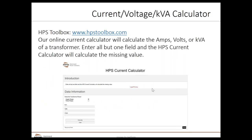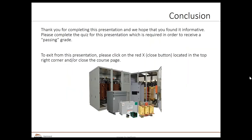We also have our HPS Toolbox with a current-voltage-kVA calculator. If you're trying to figure out what kVA you need, go to www.hps-toolbox and use the current calculator. As long as you know two of the three — amps, volts, or kVA — and whether it's single phase or three phase, it will calculate the remaining missing variable for you. Thank you very much for your time — greatly appreciate it.